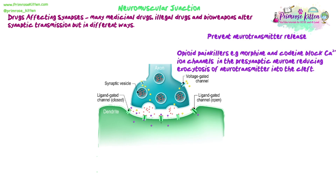Some drugs prevent the neurotransmitter from being released. Opioid painkillers, including morphine and codeine, block the calcium ion channels in the presynaptic neuron, which prevents the exocytosis of the neurotransmitter into the cleft. If no neurotransmitter gets released into the synaptic cleft, it won't bind to the receptors, which means it won't trigger an action potential in the next neuron — stopping the signal, which is exactly what you'd want when blocking a pain signal.